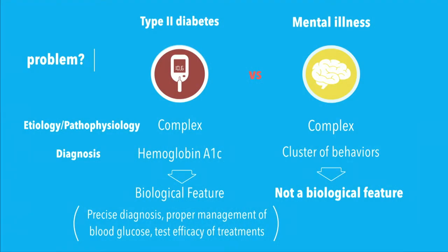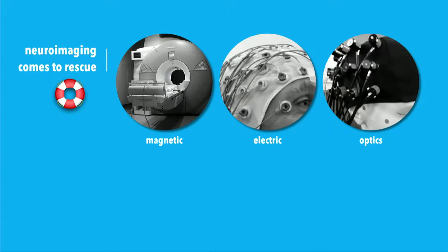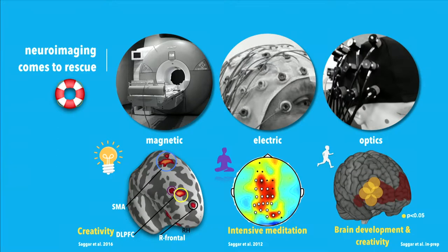We're dealing with the brain here, so we need to observe the brain, and many people have talked about neuroimaging. There are several ways to image the brain: magnetic, electric, optic, and some cool new ways as well. People have looked at what happens when you enhance creativity in the brain, what happens if they meditate a lot, or what happens with brain development.